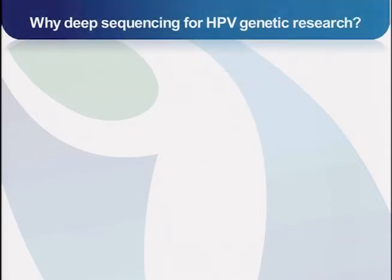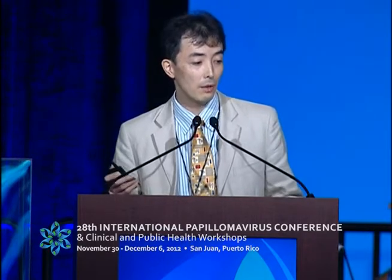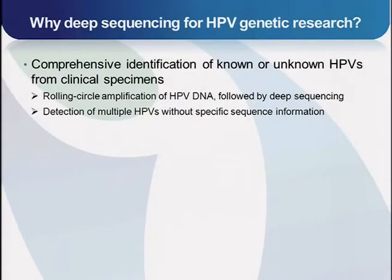As you know, HPV has a small circular genome. The genome size is about 8 kilobase pairs and it's relatively easy to determine the genome sequence by conventional Sanger sequencing. So you may think why deep sequencing is required for HPV genetic research. One useful application is comprehensive identification of known or unknown HPVs from clinical specimens. For this purpose, a rolling circle amplification has been combined with deep sequencing.